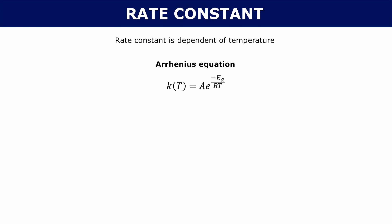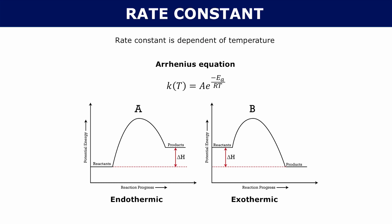Let's start with Ea. That Ea represents your activation energy, and the activation energy is going to be the energy difference between your reactants and your transition state.